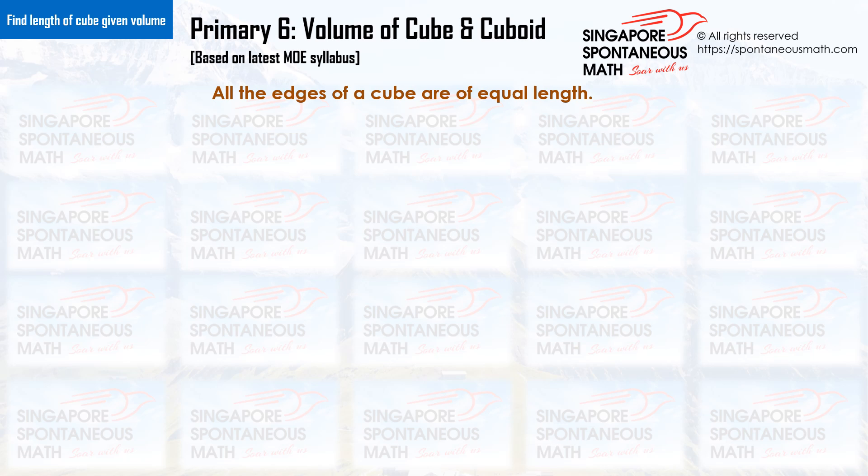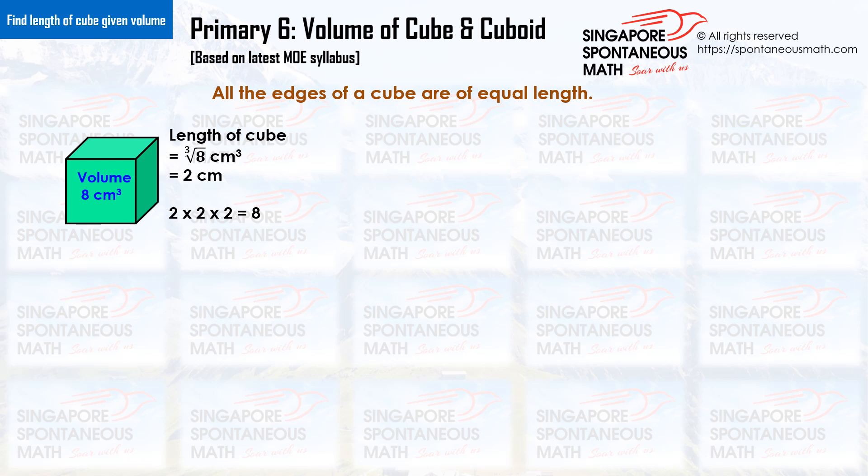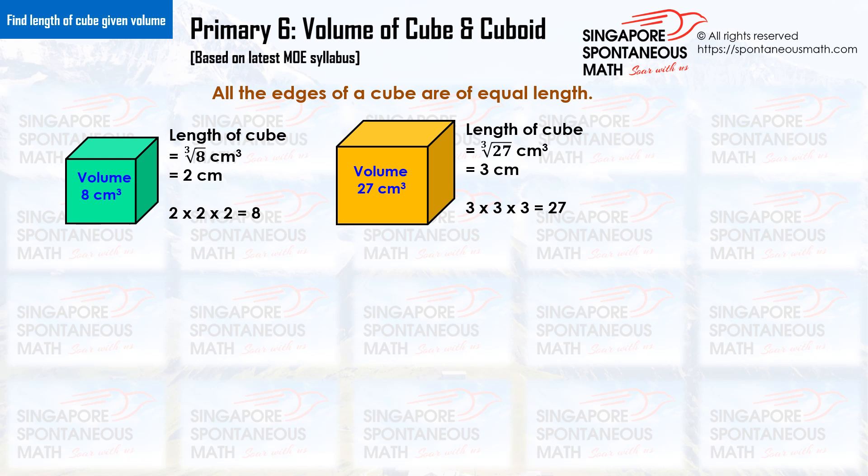All the edges of a cube are of equal length. If the volume of the cube is given, we can find the length of each side. If the volume of a cube is 8 cm³, the length of each side of the cube is 2 cm. The cube root of 8 is 2, because 2 times 2 times 2 equals 8.